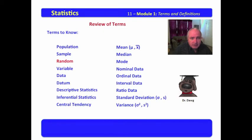Random means that each one has an equal chance of being selected. Variable, a value of interest to us, such as weight, height, vision length, those sorts of things.